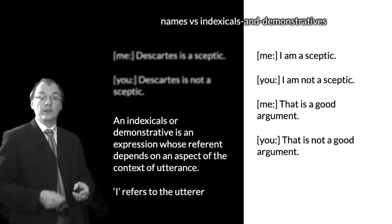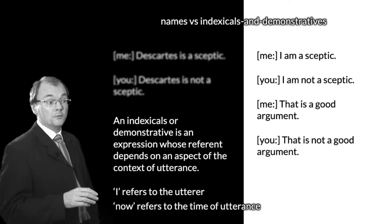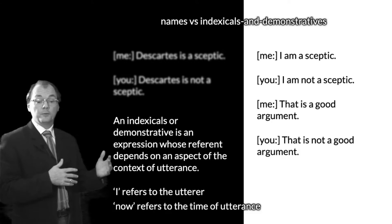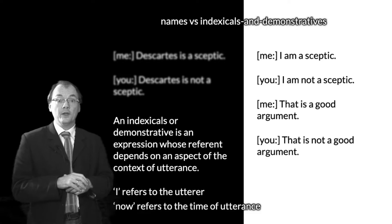Or you might say that 'now' refers to the time of the utterance. So you say 'now it's time for you to go,' and I say sometime later 'now it's time for me not to go.' If the utterances occur at different times, we're talking about different times, and therefore we may not have contradicted each other. Very simple so far — just getting a handle on what we're talking about when we're talking about indexicals and demonstratives.